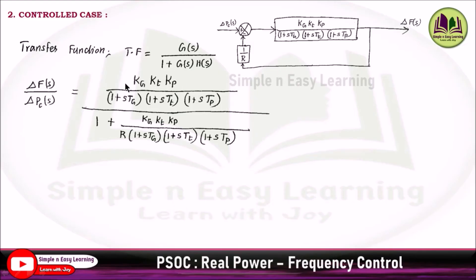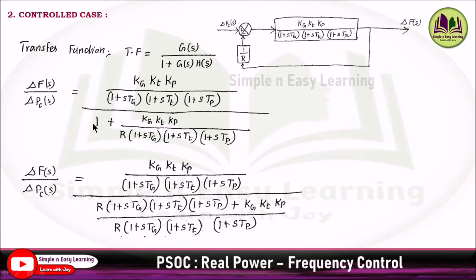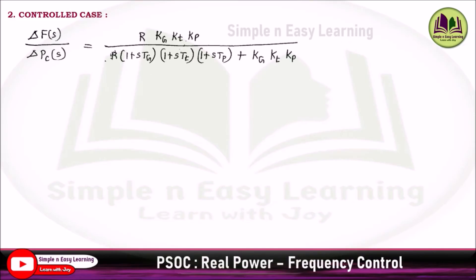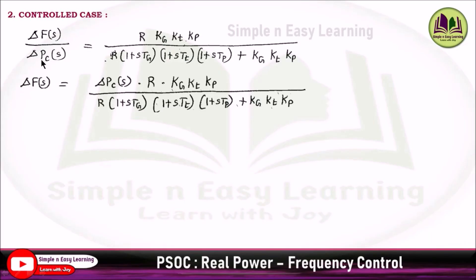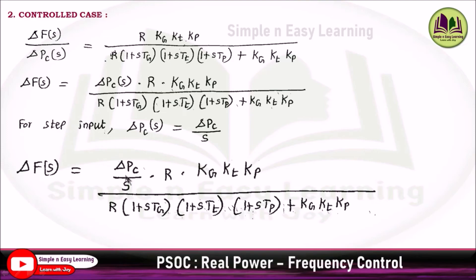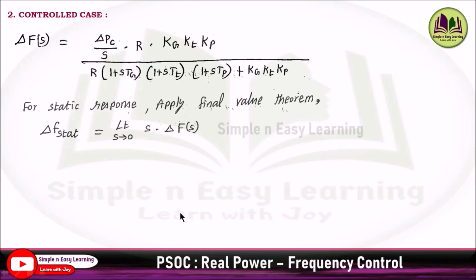The transfer function equals G(s) / (1 + G(s)·H(s)). Taking LCM in the denominator and cancelling terms, the remaining equation involves ΔPC·R·KG·KT·KP divided by the denominator term. For step input, ΔPC(s) = ΔPC / s, so substituting that gives the expression for ΔF(s).